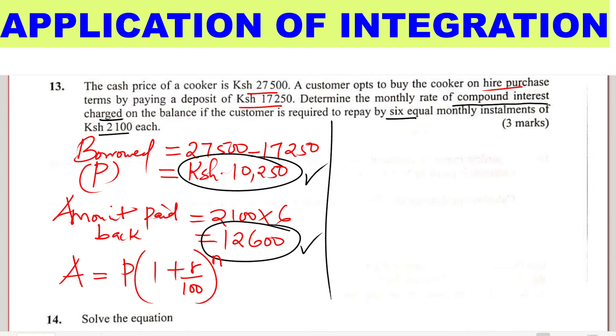Where A is the amount paid back, in this case $12,600, so we substitute $12,600. The principal is the amount borrowed, the balance we calculated, which is $10,250.